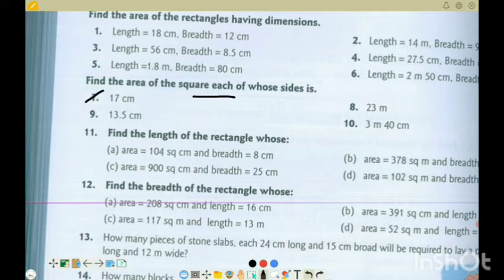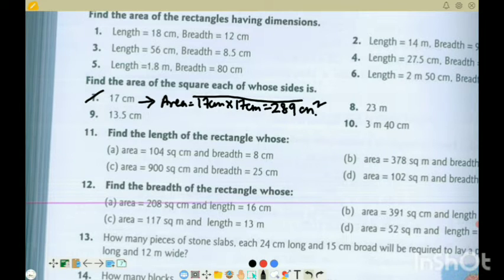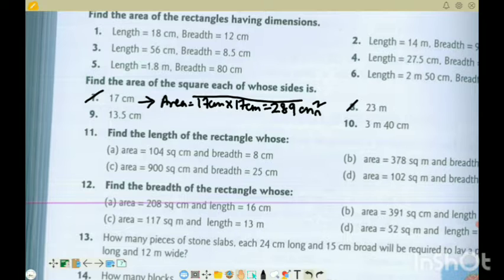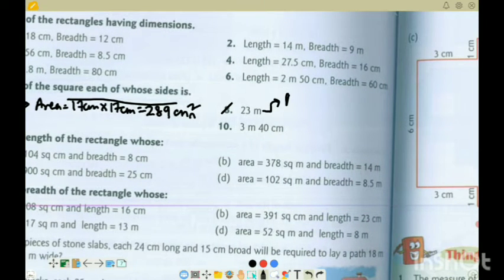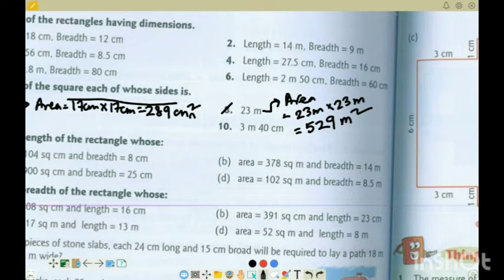Next, we will go to question 7. Area of square, each of whose sides is 17 centimeter. For a square, all sides are equal. So area is equal to 17 centimeter squared. 17 into 17 is 289 centimeter square. Next, we will go to question 8: 23 meter. So here the area will be equal to 23 meter into 23 meter, which equals 529 meter square.